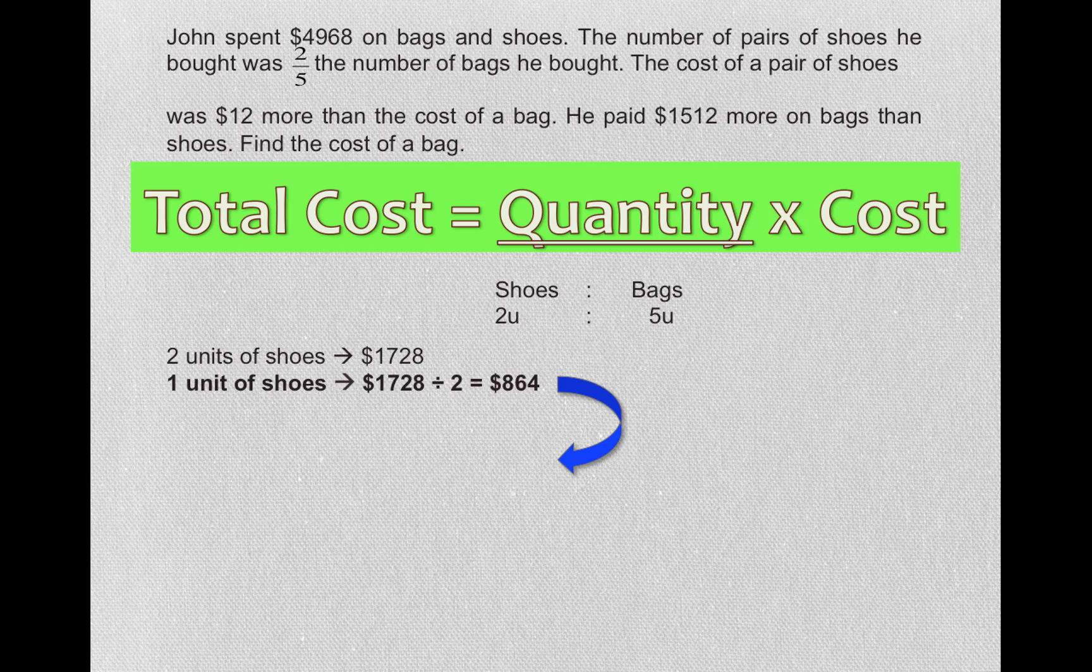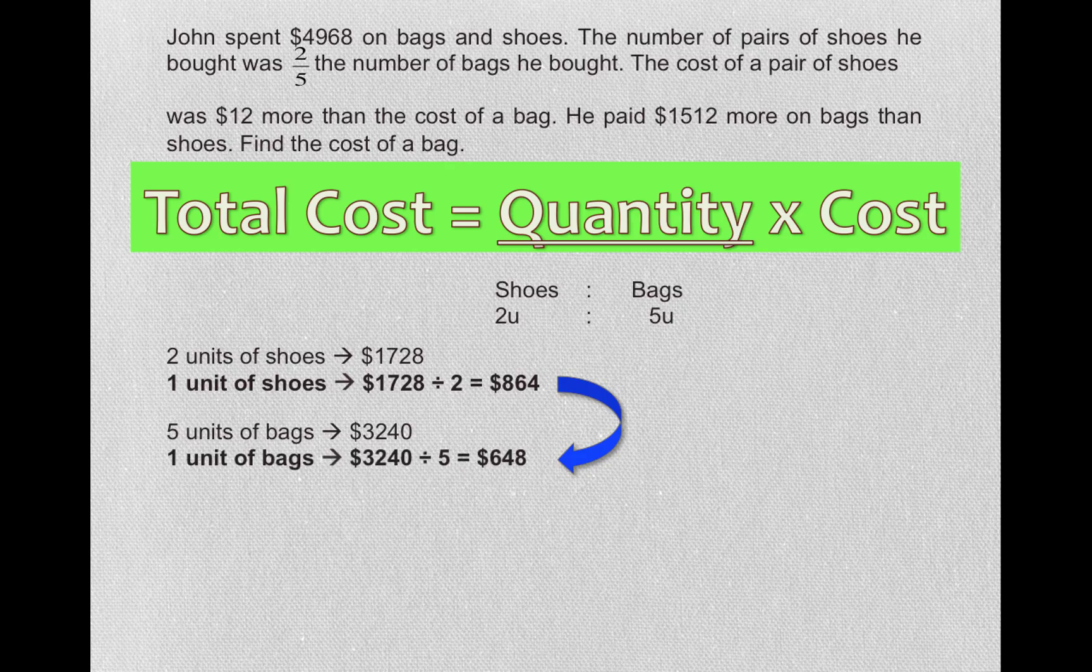Likewise, we found five units of bags, which cost us $3,240. So what is one unit of bags? Divided by five, you get $648.